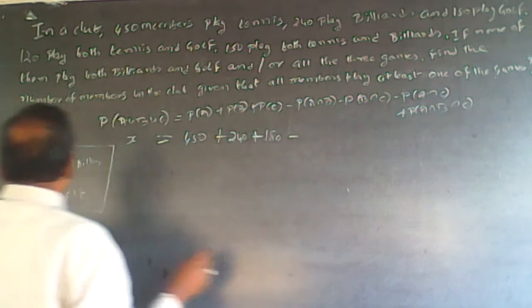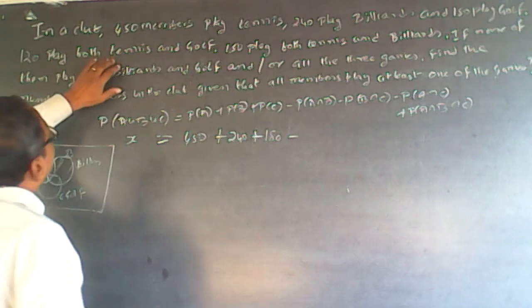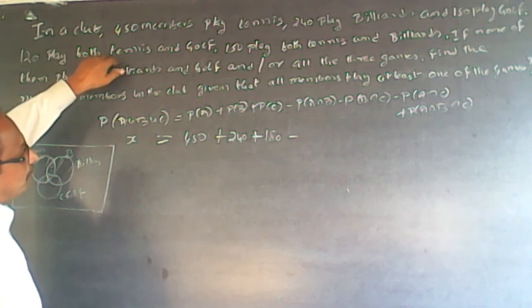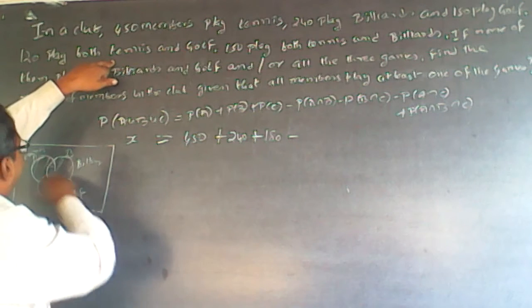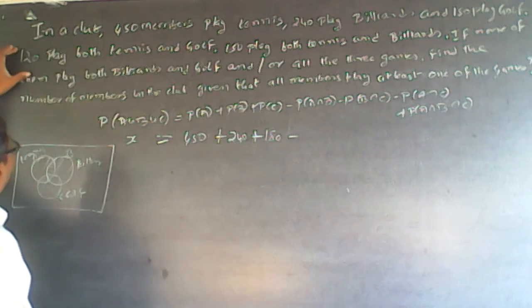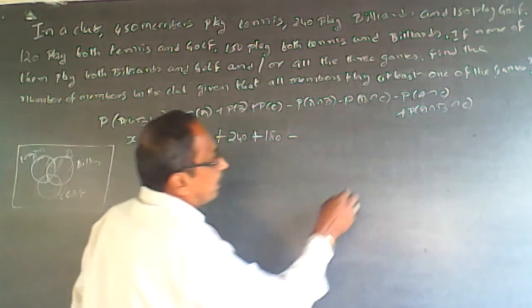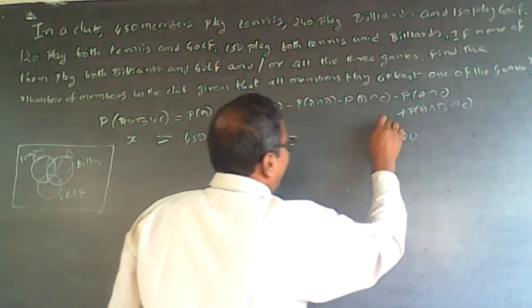Now, A intersection C, this entire portion will be there. Both tennis and golf, so tennis and golf will be A intersection C. So A intersection C will be 120. So here minus A intersection C minus 120.